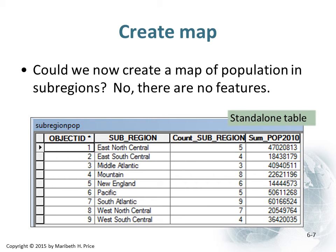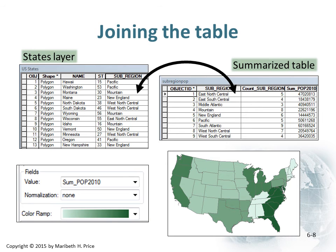Could we create a map of population by sub-regions from this? No, because what we made is a stand-alone table with no features. That brings us to joining tables. You could take the state stats layer and do a join where you take your summarized table based on sub-regions and join it to the sub-region spatial data, so you can see things like the count and total population. You could then normalize that sub-population value, apply a color ramp, and see which sub-regions are the most heavily populated.